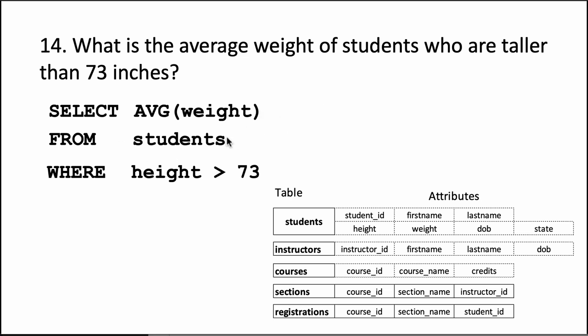It is going to go to the students table. It is going to take only those students whose height is greater than 73 inches, so it is going to be left with probably a subset of the students. And then it is going to compute the average weight for all those students.